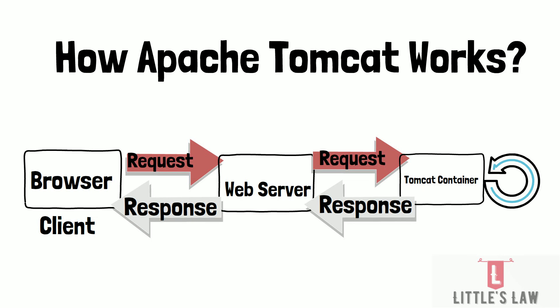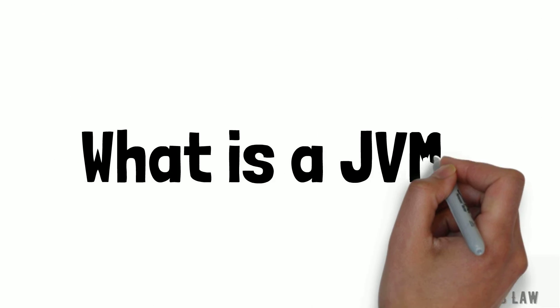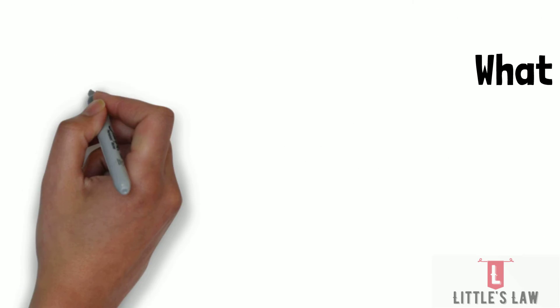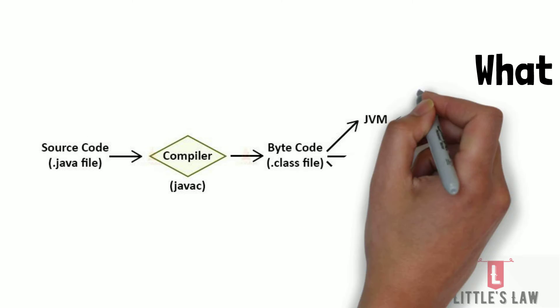So we have seen steps 1 to 6 of how Tomcat works. Apache Tomcat uses a number of components to handle requests and generate responses, including servlets, JSPs, and filters. It also provides a number of configuration options that allow us to customize the behavior of the container and web applications. While discussing how Apache Tomcat works, we encountered the term JVM — the Java Virtual Machine — so what is that?